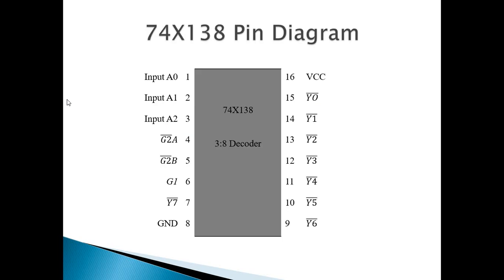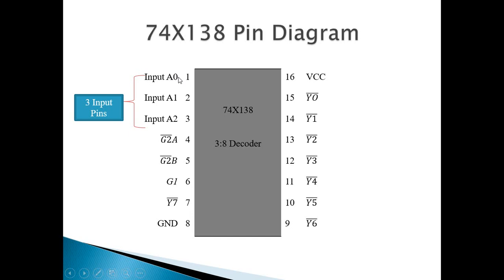Now we will see the 74138 pin diagram. 74138 is a 3-to-8 decoder, so it has 3 input lines: A0, A1, and A2, where A0 is LSB and A2 is MSB. So if 000 is applied at the input lines you will get output Y0 as 0 and rest all are 1. In normal decoder operation, if 000 is applied Y0 is 1 and rest all are 0. But here outputs are active low, so you will get Y0 as 0 and rest all are 1.